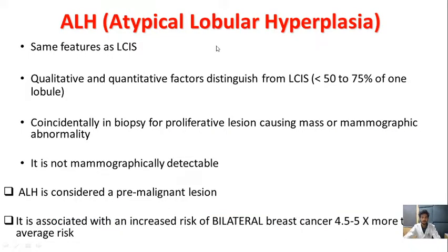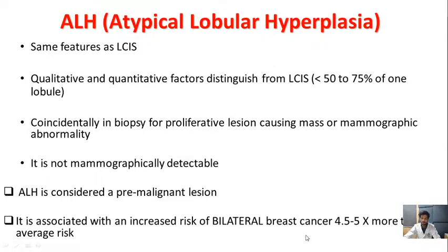Atypical lobular hyperplasia has features similar to lobular carcinoma in situ. However, it involves less than 50 to 75% of one lobule, compared to more than 50% in lobular carcinoma in situ. It is also detected coincidentally on biopsy for proliferative lesions, is not mammographically detected, and ALH is considered a premalignant lesion. It is associated with an increased risk of bilateral breast cancer of 4.5 to 5 times more than the average risk.